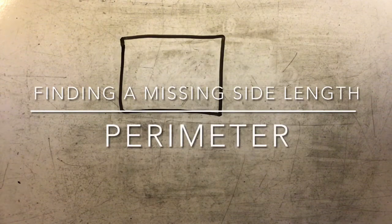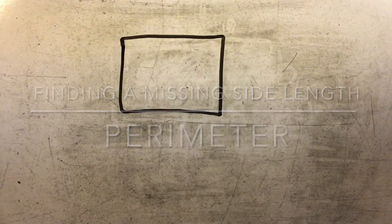Hey there. Today we're going to learn how to find one of the missing side lengths of a rectangle when given the perimeter of that rectangle along with another side length.